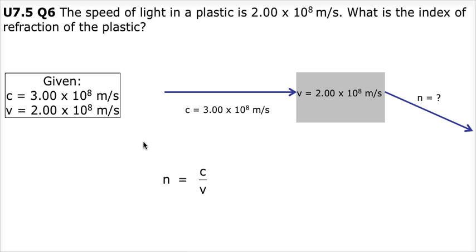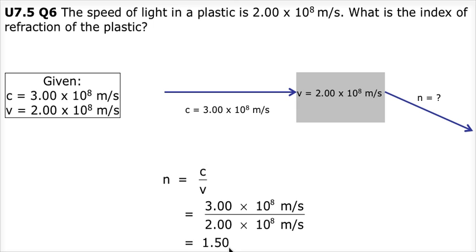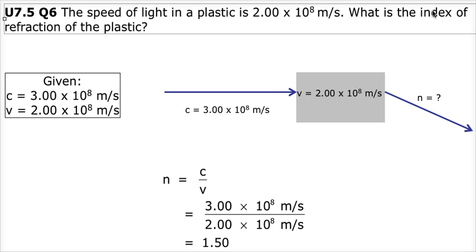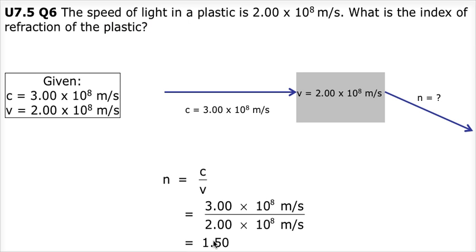The equation I chose was n equals c over v, which if you substitute the given in is 3.00 times 10 to the power of 8 meters per second divided by 2.00 times 10 to the power of 8 meters per second, which equals 1.50. This means the index of refraction of the plastic is 1.50.